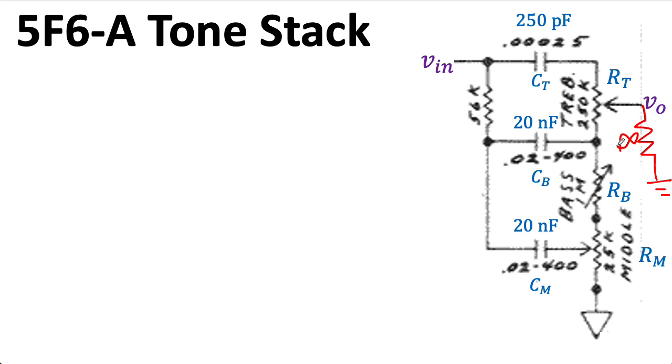In the case of the Fender Bassman, it's driving a long-tailed pair. The resistor in this 56k spot is sometimes called the slope resistor. And one thing to remember about the capacitors is that if you don't see a unit listed, generally, it's assumed that the unit is microfarad. So, I have two 20 nanofarad capacitors and a 250 picofarad capacitor.